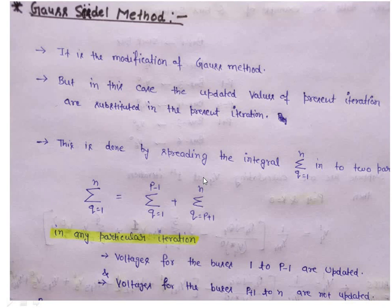First of all, we will calculate the voltage at the first bus, that is v1, then v2, then v3, and likewise up to n we will calculate all the values in any particular iteration. Suppose in any iteration, if we are calculating the voltage at the pth bus, we have already calculated the voltages at bus number 1 to p minus 1. So these voltages of bus 1 to p minus 1 should be used to calculate the voltage at the pth bus in that particular equation.